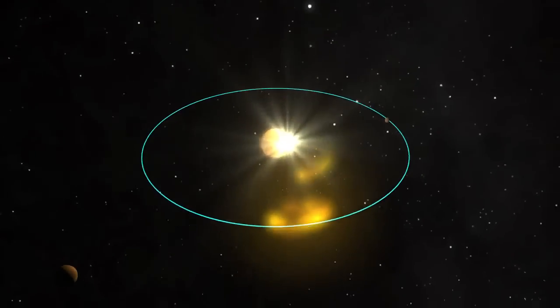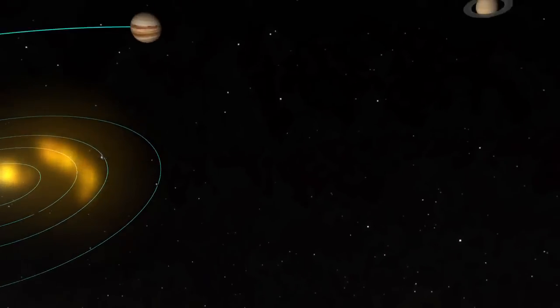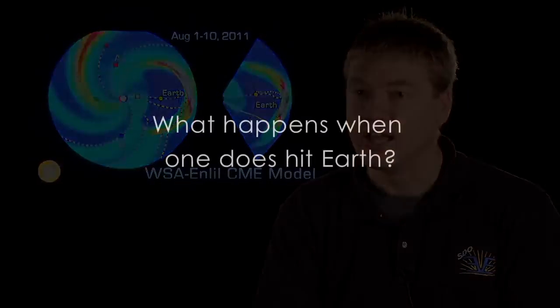Solar flares and coronal mass ejections do not always hit Earth. They happen all over the Sun, and depending on where they occur determines whether or not they're going to travel towards the Earth. Some could be shot off to the side and miss us completely — they could go up, go left — somewhat like curveballs that a pitcher throws. They could seemingly come straight for us and then miss us completely.